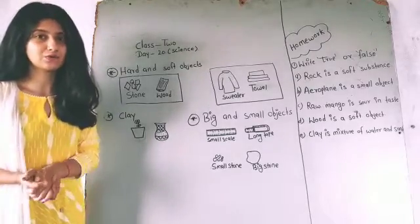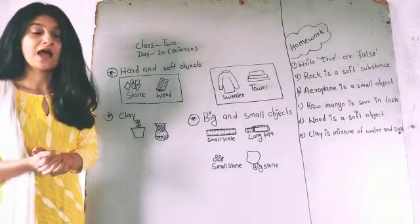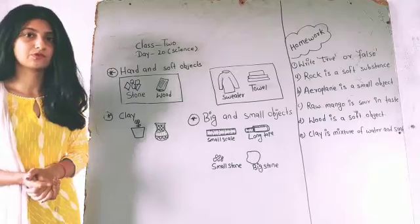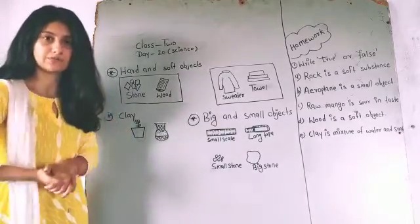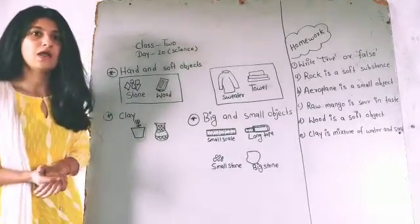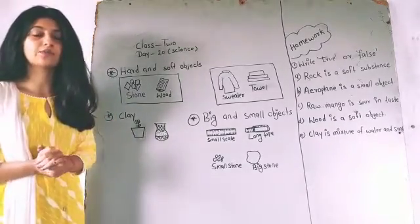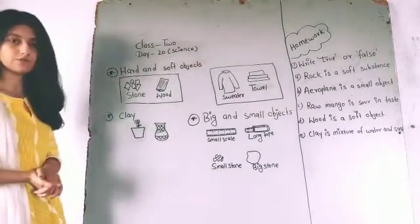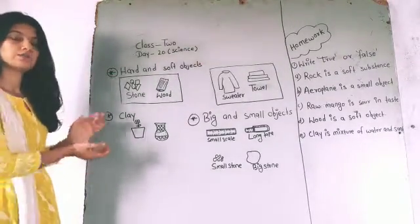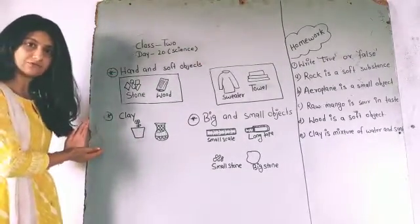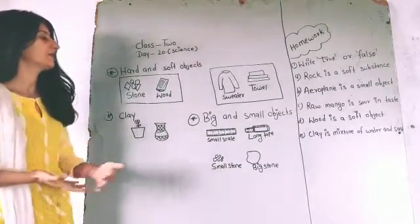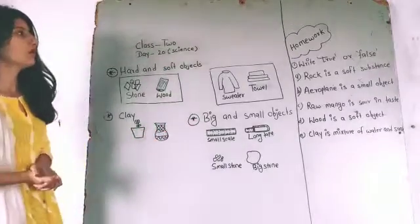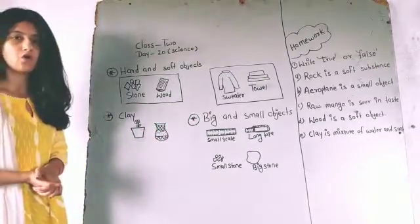So here we have completed our today's session. I hope that you have understood the chapter. We have completed our chapter, and I hope that now you are able to describe hard and soft objects, objects that are made from clay, and big and small objects.